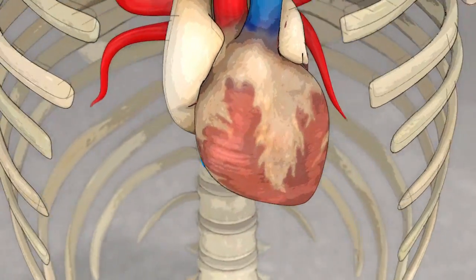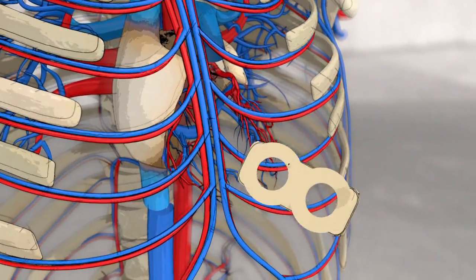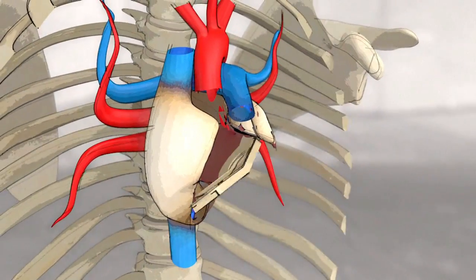Implanting an artificial heart involves cutting the failing heart under the auricles to ensure blood flow to the organs. A biocompatible interface is sutured to the auricles.